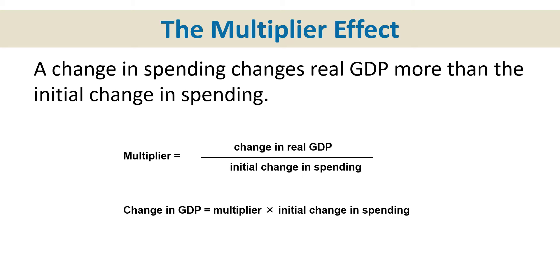We're saying one-time injections have a multiple effect — that's why we say multiplier. And it works both ways. If the government spends less, it multiplies and GDP decreases by even more than the initial change. When we're doing policy, we have to take into consideration the multiplier.